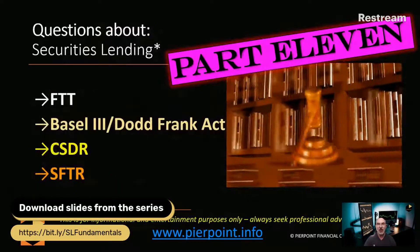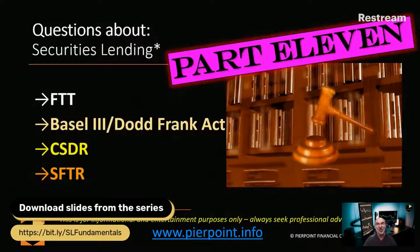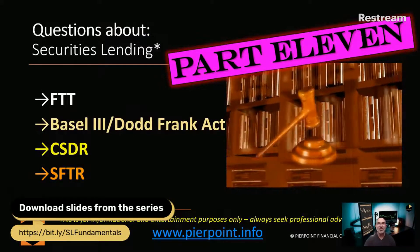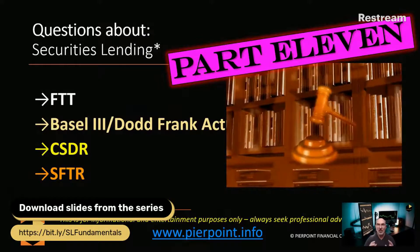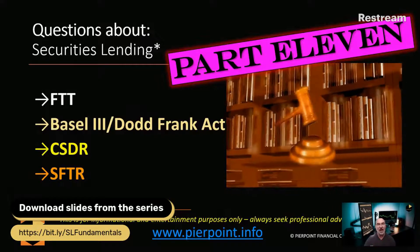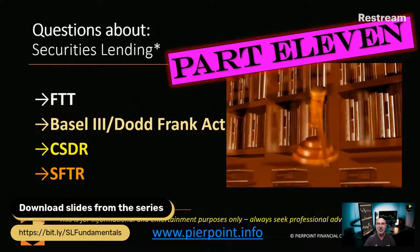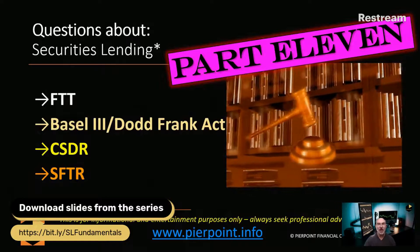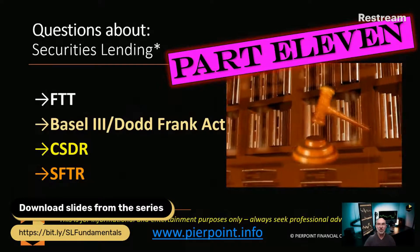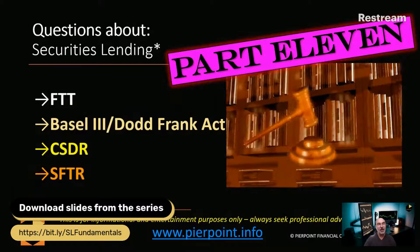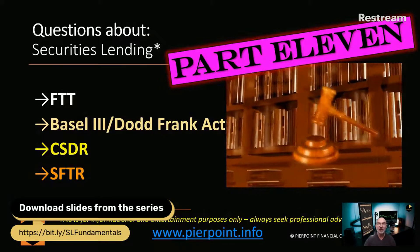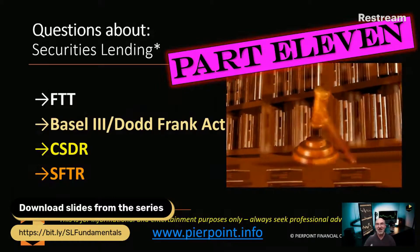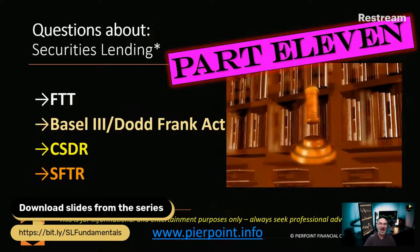Today, we're going to talk about five different regulations very briefly: the financial transaction tax, then a combination of Basel III and the Dodd-Frank Act — because there's some overlap in objective and impact — number three, CSDR, and number four, SFTR. So it's alphabet soup day today.